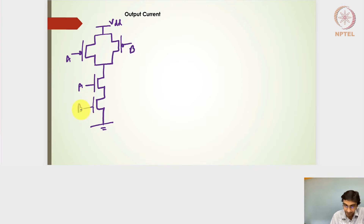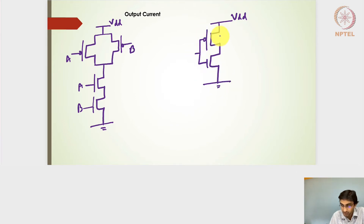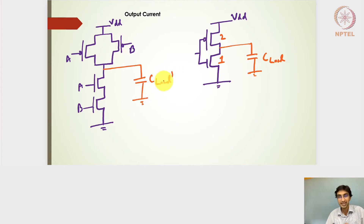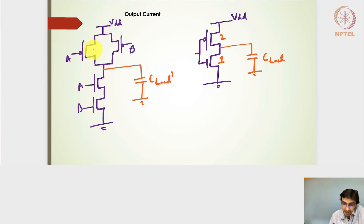Here is input A and input B. Let me also draw the inverter — the 2-to-1 benchmark inverter — with a PMOS transistor connected to an NMOS transistor, with sizes 2-to-1. I'll also add a load capacitance C_load here and another C_load capacitance for the NAND gate. The capacitances may be different, so I'll label it C_load prime.